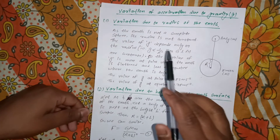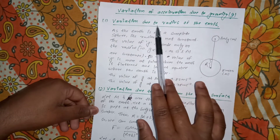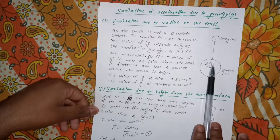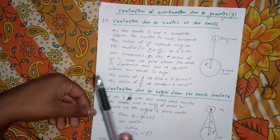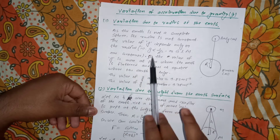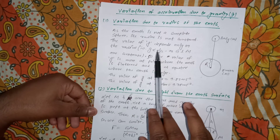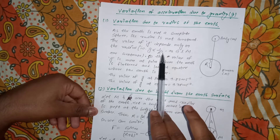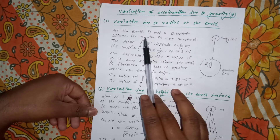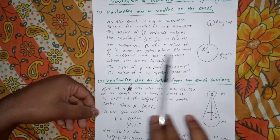Now let's see the variation of acceleration due to gravity. The first case is variation due to the radius of the Earth. As the radius of the Earth changes, the value of g also changes. In the formula g = G·M / R², since G and M are constants, they can be eliminated, giving g ∝ 1/R². So g and R are inversely proportional: if R increases, g decreases, and if R decreases, g increases.